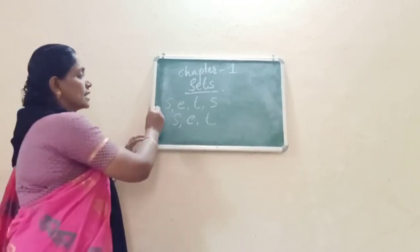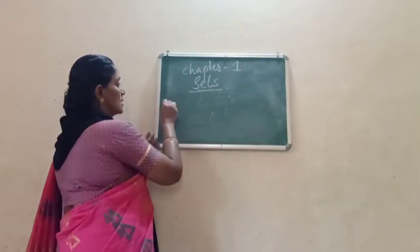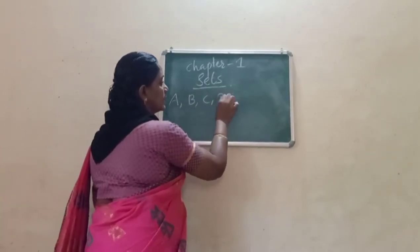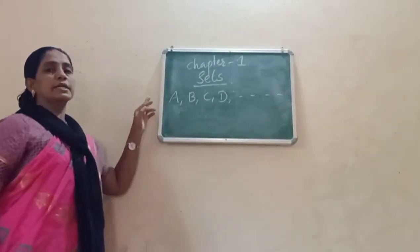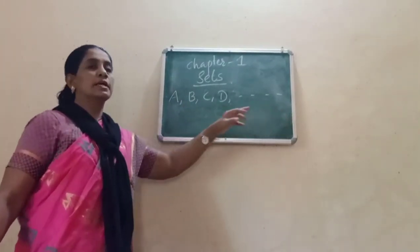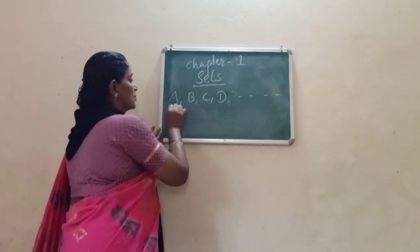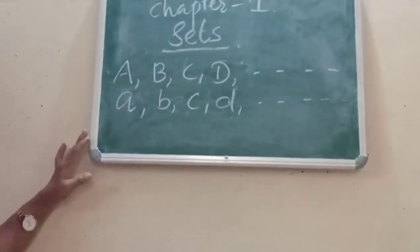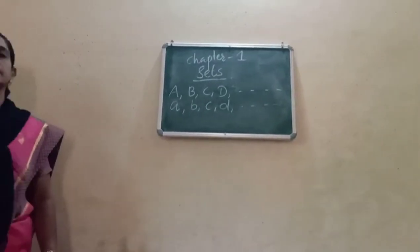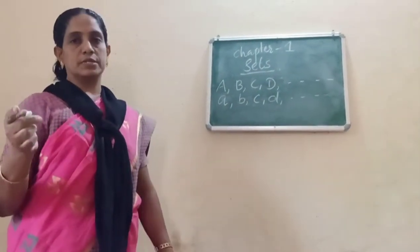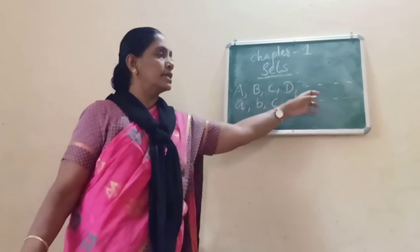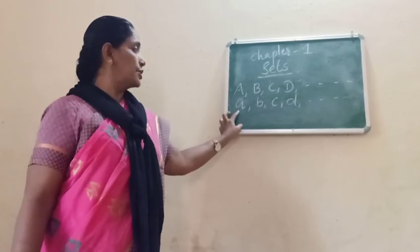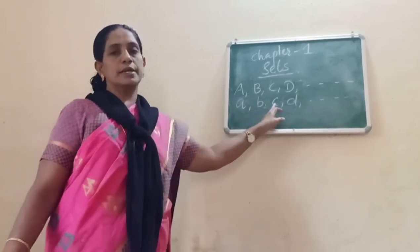Sets are denoted by the capital letters of the English alphabet: A, B, C, D, etc. The elements of the set are represented by small letters: a, b, c, d, etc. Sets are denoted by capital letters and elements are denoted by small letters.